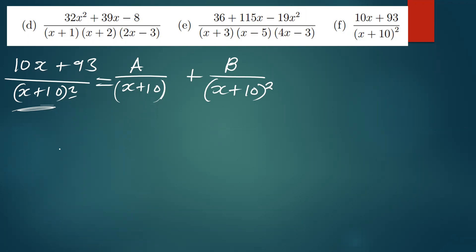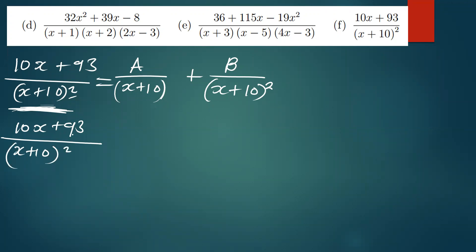The next step is to find the common denominator. To find the common denominator, you simply take what you have there: 10x plus 93 over x plus 10 raised to the power of 2. The common denominator on this side will simply be x plus 10.